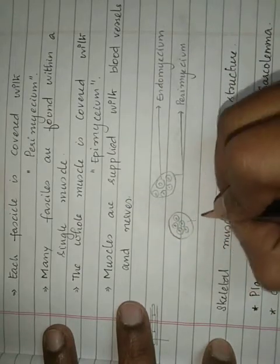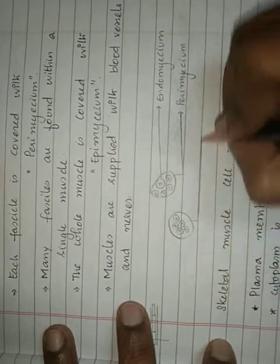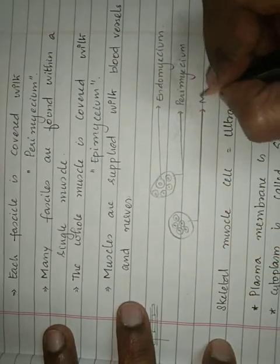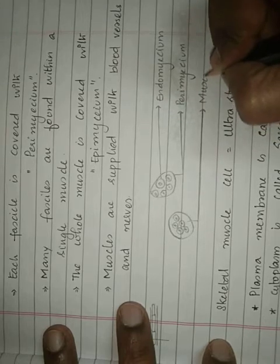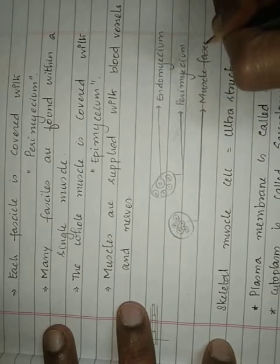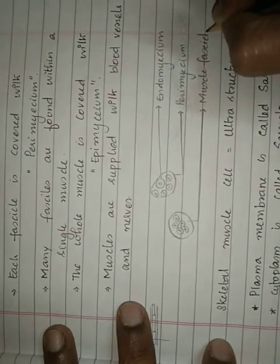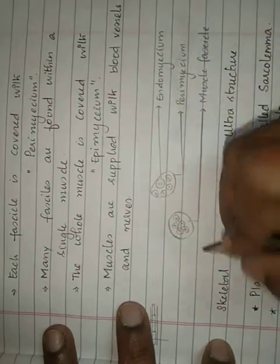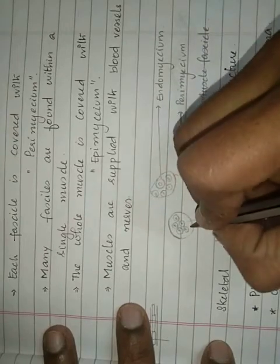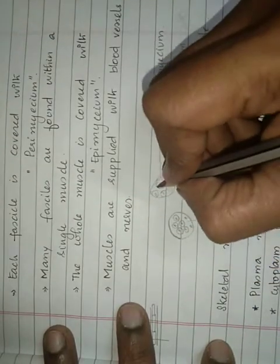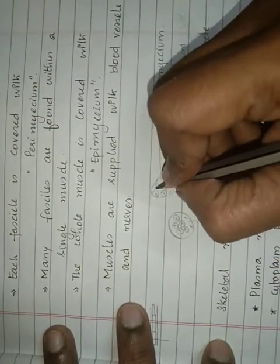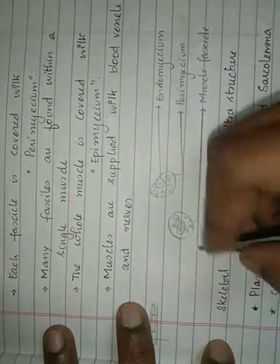A muscle fascicle contains many muscle fibers, along with nerves and blood vessels. Many such bundles together form a single muscle, and the space within epimysium and perimysium is filled with connective tissue.